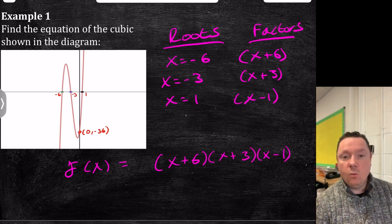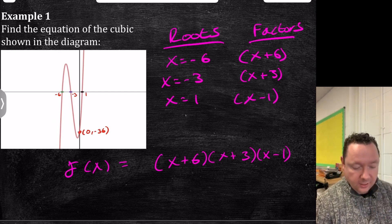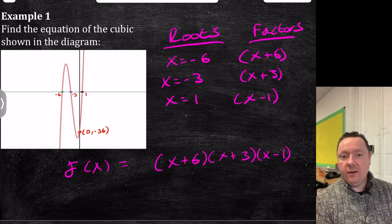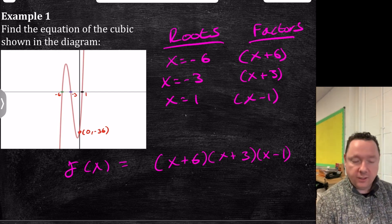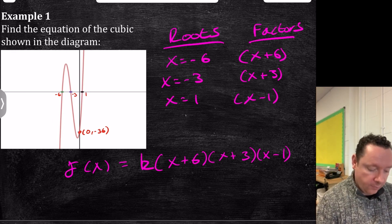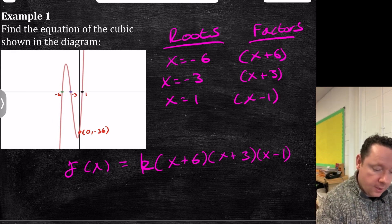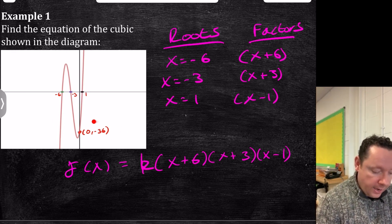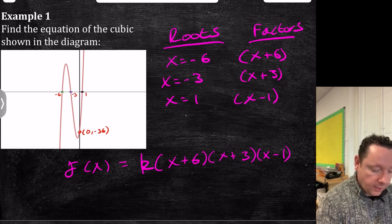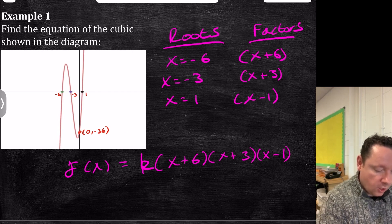But it could also be times any number you want, because if that was equal to 0, the k in the front, the number in front, would make a difference when you factorize. So we need to write k. We need to work out this k. But that's okay, because we know that when x is 0, y is minus 36.